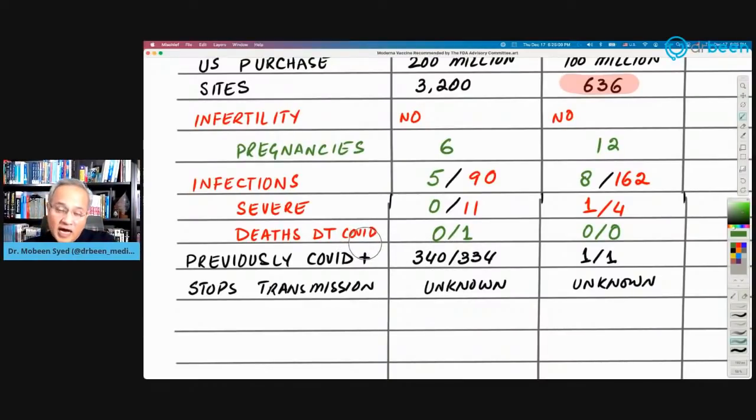Death because of COVID after the vaccination. So no death in both of them. So that is a very important thing to take away, that there were no deaths after the vaccination. Either of the vaccine will help prevent death because of COVID. Then was the vaccine tested on people who already had COVID-19? So yes, in case of Moderna, 340 people who got the vaccine had already the infection as well, and 334 in the placebo. And I couldn't find much data here on Pfizer. I think this data is incorrect. I just could not find it correctly.